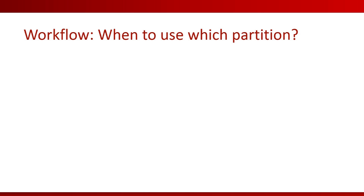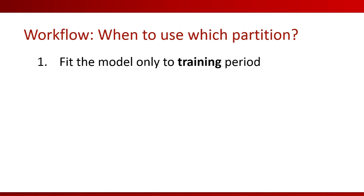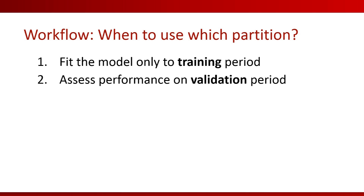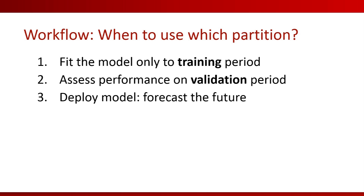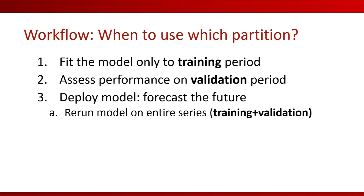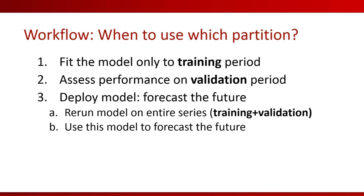Let's formalize this process into the following steps. We have training, validation, and future partitions. We fit the model only to the training period, and assess performance on the validation period. When we deploy the model, that is when we use the future period. Before actually deploying the model, we recombine our training and validation periods and rerun the model on the entire series. This is important because we have more data, and the validation period contains the most recent data, which is usually most important for future forecasts. After we do this, we can use our final model to forecast the future.